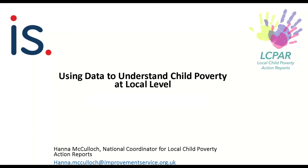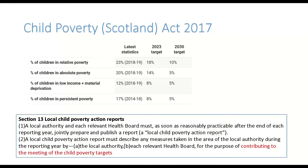Data can also potentially help us track progress and change in rates of poverty over time — that's the question I get asked most in relation to data and child poverty. This relates to the Child Poverty Scotland Act 2017, which sets ambitious targets for the reduction of child poverty against four key income-based measures to be achieved by 2030, with interim targets set for 2023–2024.